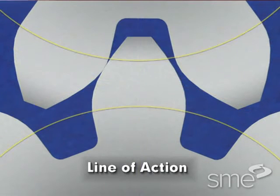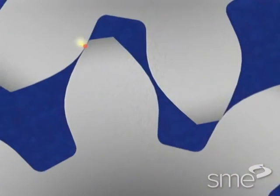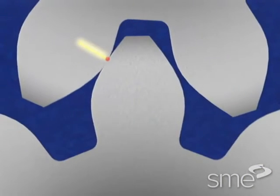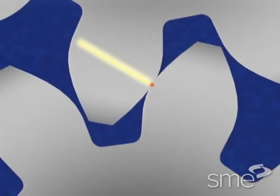The line of action is a straight line tangent to the base circles of mating gears and passes through the pitch point. The line of action is the path of contact of the two mating involute profiles as the gears rotate.